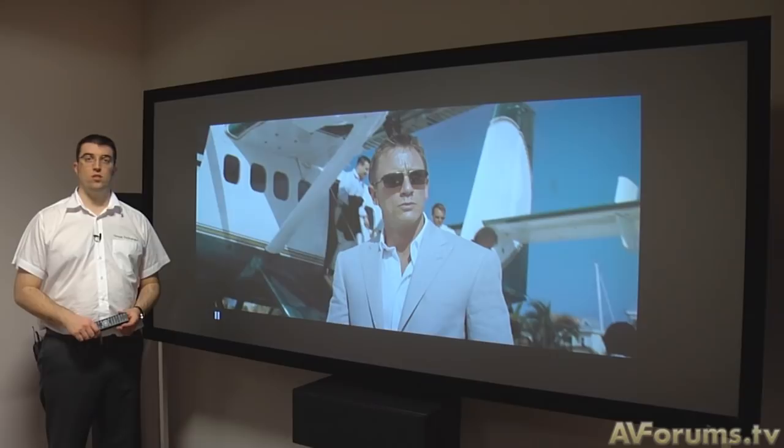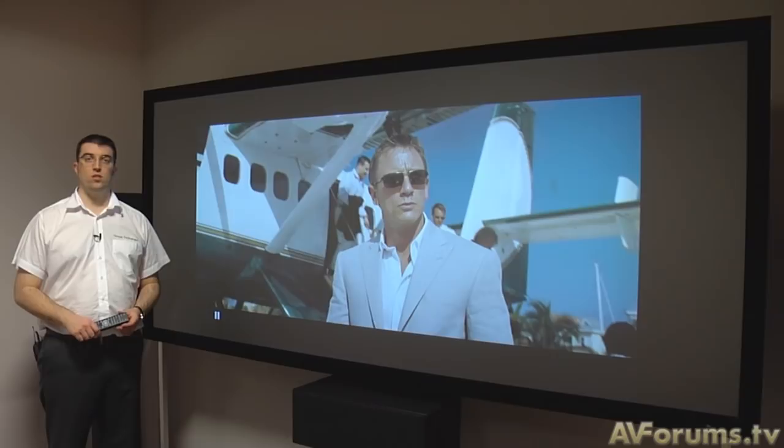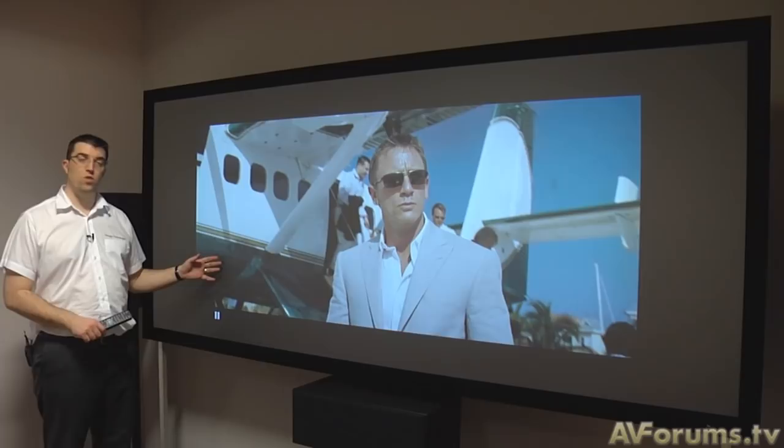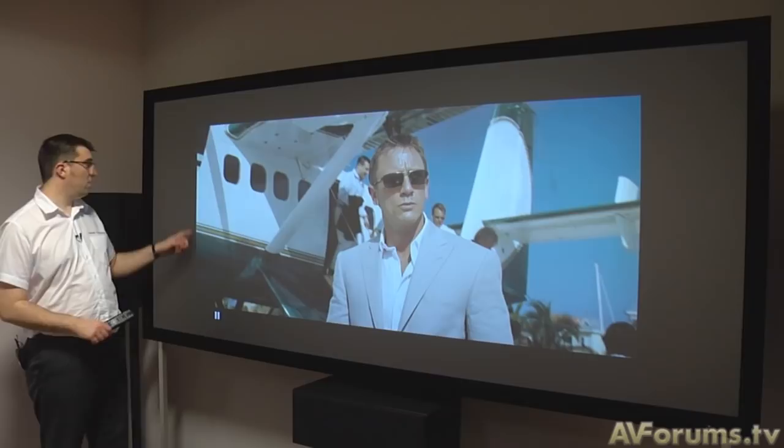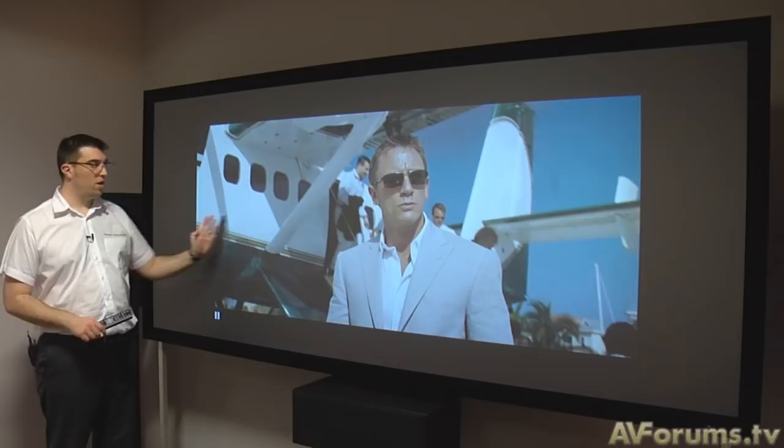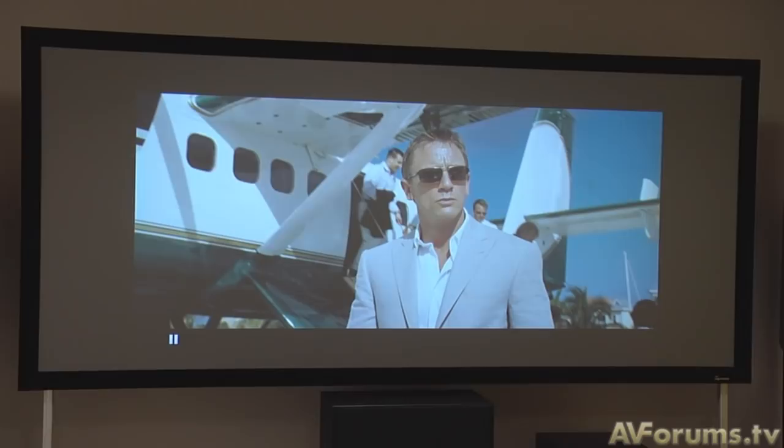The screen that you need to use for an anamorphic projection system has an aspect ratio of 2.35 to 1. On the screen here you can see a clip from the James Bond film Casino Royale. This clip, as you can see, has black bars at the left and right. This section in the centre represents what you would see on a normal 1.78 to 1 screen.